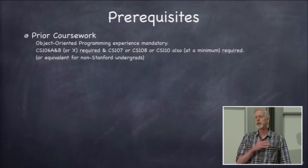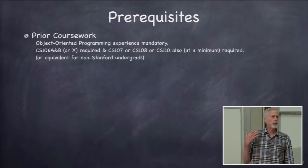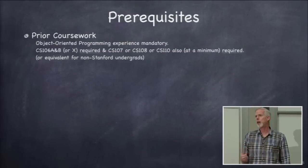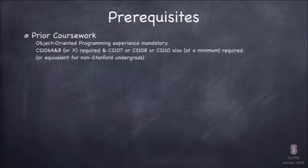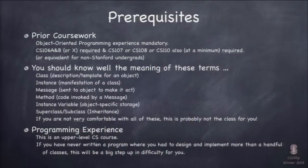iOS is a completely object-oriented programming development environment - not just the language, but the entire design and the way you use it. If you're not comfortable with things like subclassing, you'll be behind the curve. At Stanford that means CS106A and B or CS106X, CS107, CS108 (a great object-oriented course), and CS110. All the work in this class is programming - almost all programming all the way to the end, including your final project.